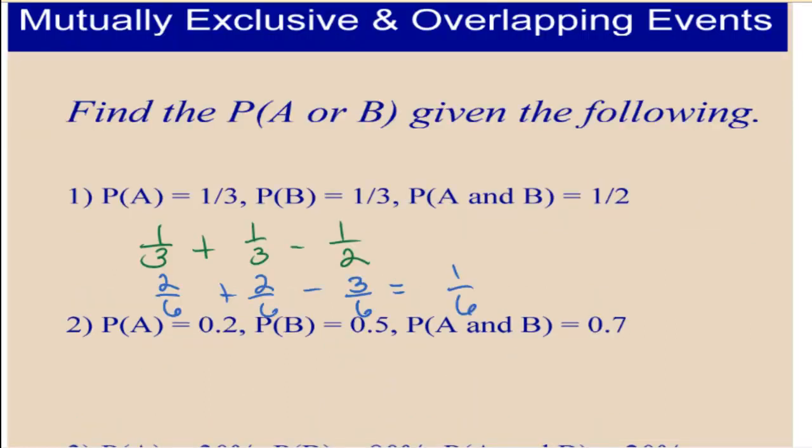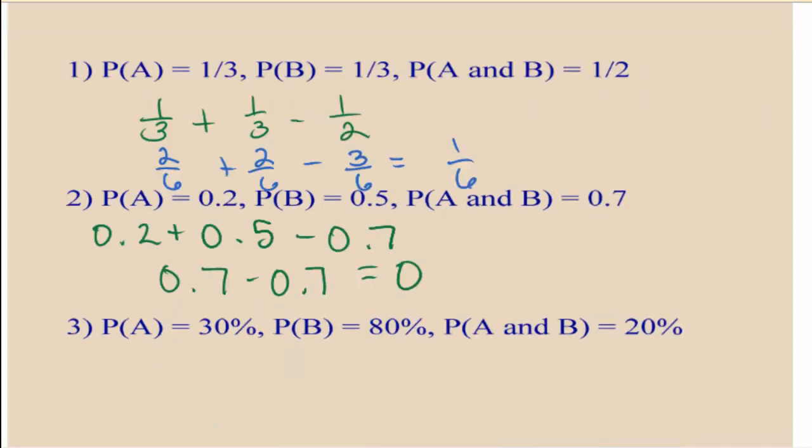The next problem, we just have decimals, but the same process. We're going to add together the individual events and subtract out the overlapping event to solve for the or. This is actually going to be zero. So the probability of getting event A or event B is zero in this example.